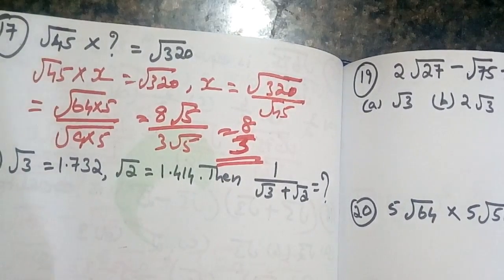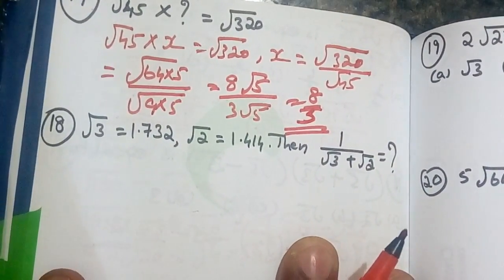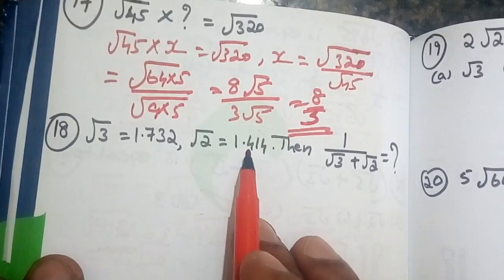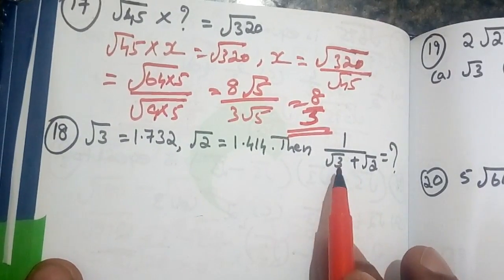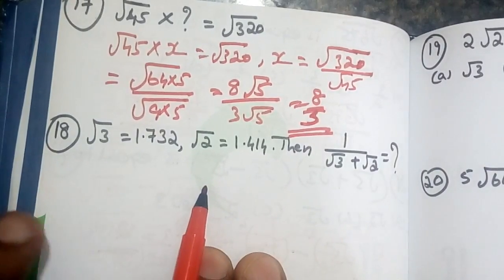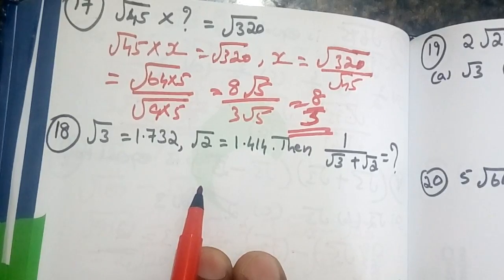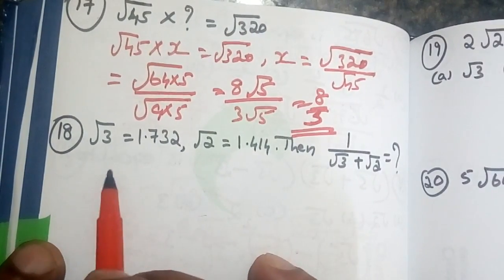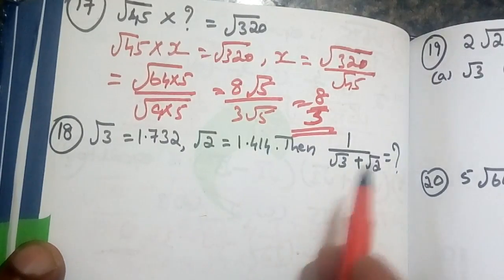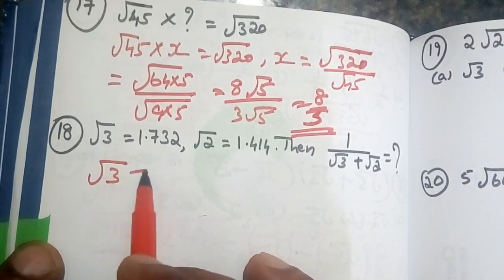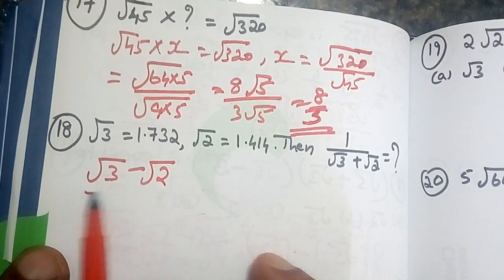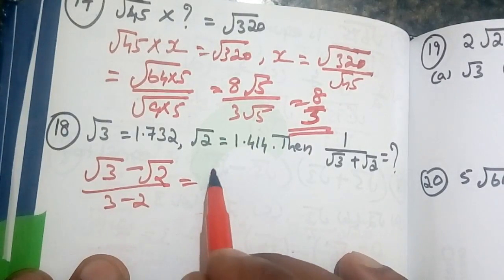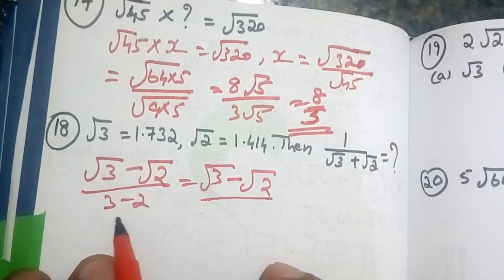Root 3 is equal to 1.732 and root 2 is equal to 1.414. For 1 by root 3 plus root 2, we rationalize using root 3 minus root 2 over root 3 minus root 2. Since 3 minus 2 equals 1, the answer is root 3 minus root 2, which equals 1.732 minus 1.414 equals 0.318.